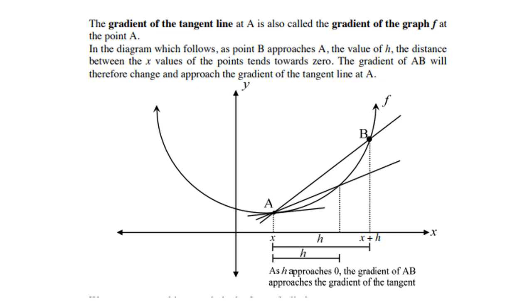In the diagram which follows, as point B approaches A — that means B moves down towards A — the value of h, which is the distance between the x-values of the points, tends towards zero. So the gradient of AB will therefore change and approach the gradient of the tangent line at A. Therefore the limit of h will approach zero.